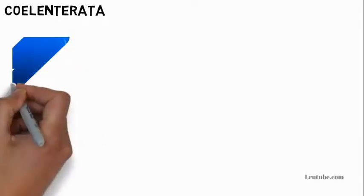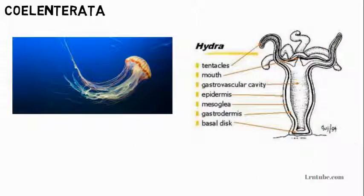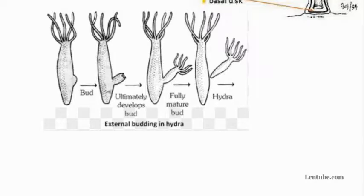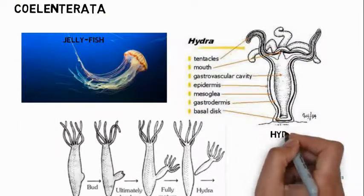Coelentrata: The body is made up of two layers. They are mainly aquatic organisms. They are radially symmetrical, meaning the organism can be divided into two similar halves by passing a plane at any angle along a central axis. They have soft jelly-like bodies with tentacles and stinging cells used for capturing prey. They reproduce asexually by budding. Examples: jellyfish, hydra, and coral.